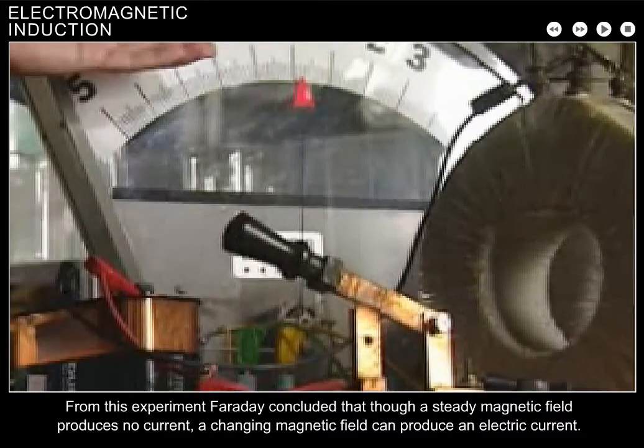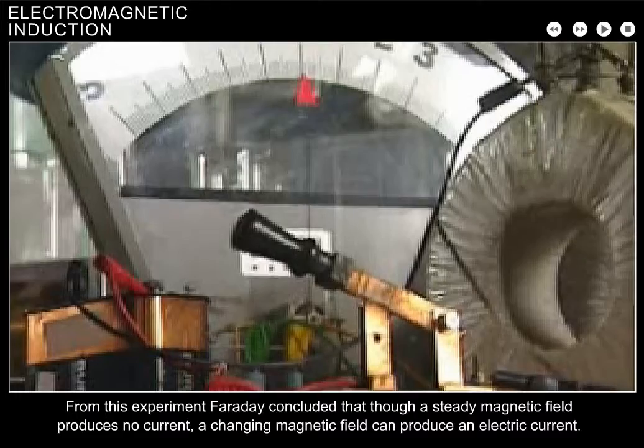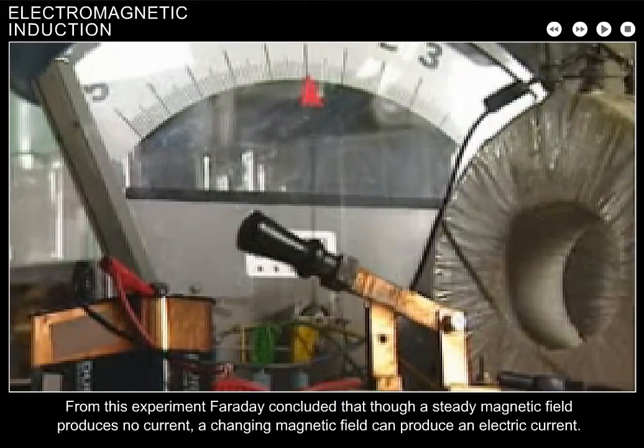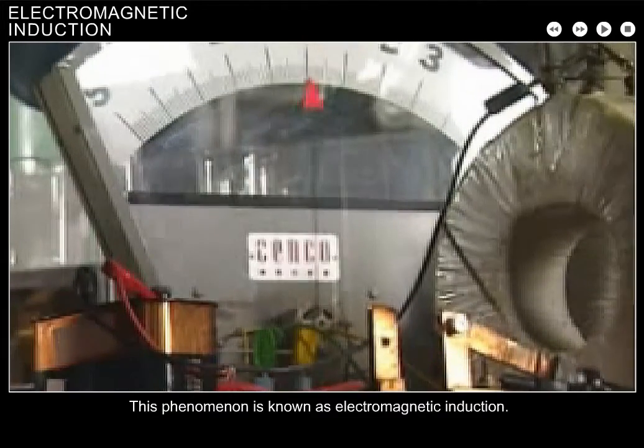From this experiment, Faraday concluded that though a steady magnetic field produces no current, a changing magnetic field can produce an electric current. This phenomenon is known as electromagnetic induction.